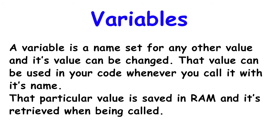Variables. A variable is a name set for any other value and its value can be changed. That value can be used in your code whenever you call it with its name. That particular value is saved in RAM and it's retrieved when being called.